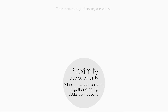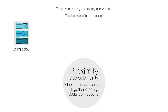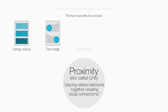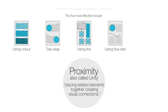There are many ways of creating connections. The five most effective include: using color to group related elements, using text wrap to connect body text to a related image, using the element of line to connect two elements, using flow text along a path to wrap a text element to an image, or using the principle of alignment to connect elements.